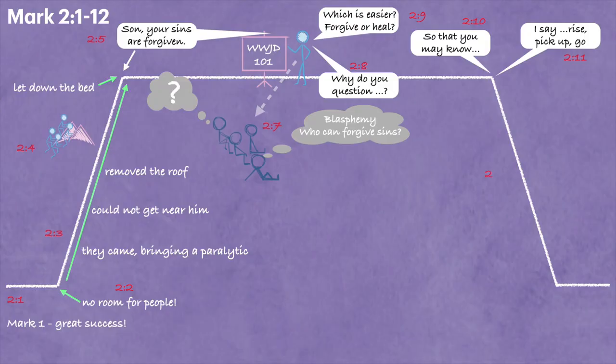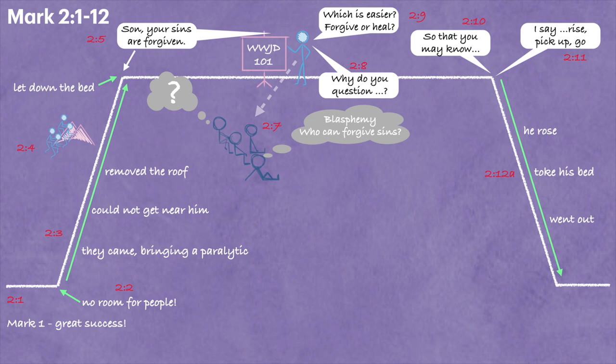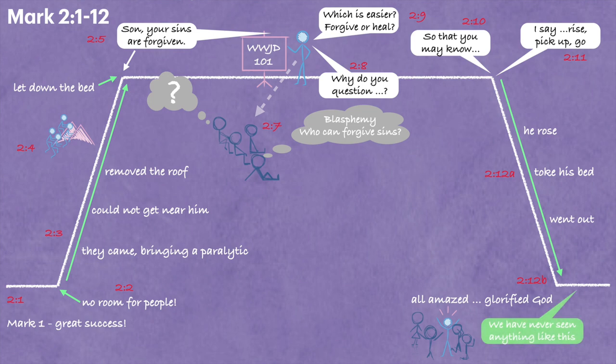Now the resolution — notice how quickly this story resolves itself. The man gets up and leaves the room in half a verse. The intensification and resolution of biblical stories tend to happen very, very quickly. They hold you on that plateau of conflict, where the central theme is discussed on the top line. And then finally, over here on the conclusion, we have the statement from the crowd: 'We have never seen anything like this.' Mark is giving you a punchline or takeaway at the very end.